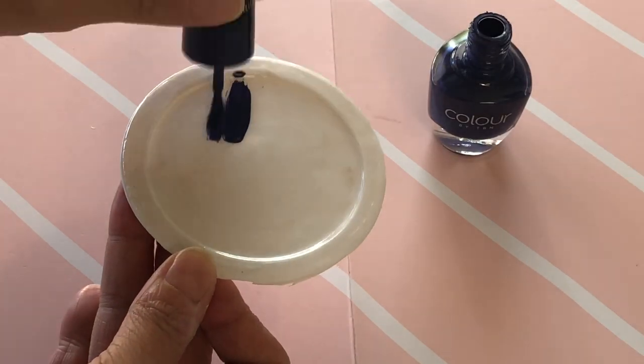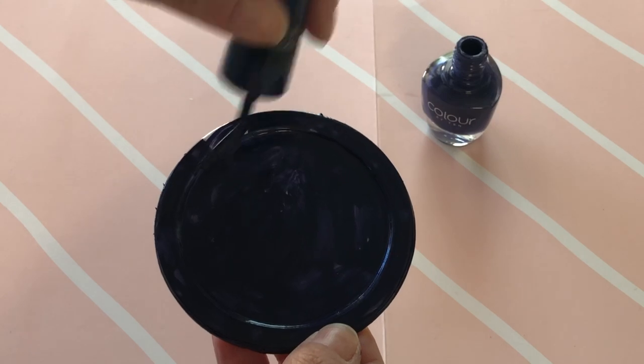As with the mug, give the plate a couple of coats of Night Sky polish, then flick on the white dots.